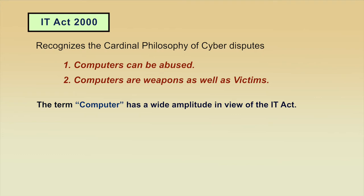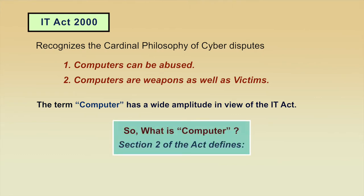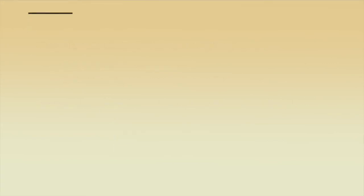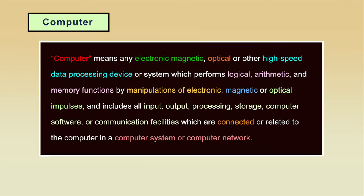The term 'computer' has wide amplitude in the IT Act. Computer means any electronic, magnetic, optical, or other high-speed data processing device or system which performs logical, arithmetic, and memory functions by manipulation of electronic, magnetic, or optical impulses. It includes all input, output processing, storage, computer software, or communication facilities connected or related to the computer in a computer system or computer network.